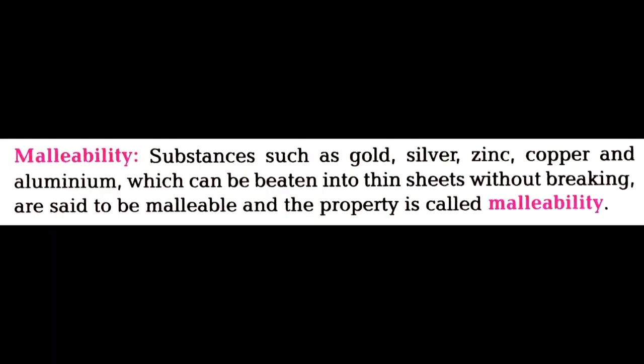Here are some other fundamental properties according to which we classify and use substances. Malleability: substances such as gold, silver, zinc, copper, and aluminium — most metals — can be beaten with a hammer or pressed by machine into thin sheets without breaking. They will not break; they will spread into a thin sheet. This property is called malleability, and these kinds of substances are called malleable.